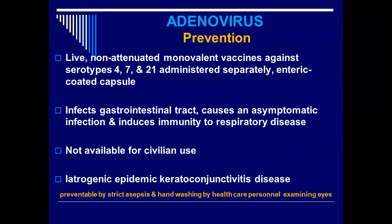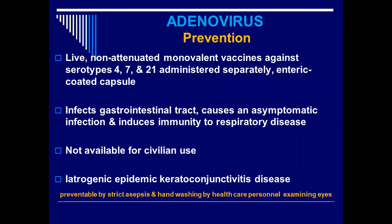They are given by the oral route. The virus has been packed in capsules to avoid damage by gastric juices or acidity. The virus is released in the intestine, which may cause some diarrhea, but it will also stimulate production of antibodies and provide protection against respiratory tract infections. It infects the gastrointestinal tract, causes asymptomatic infection, and then induces immunity to respiratory disease.